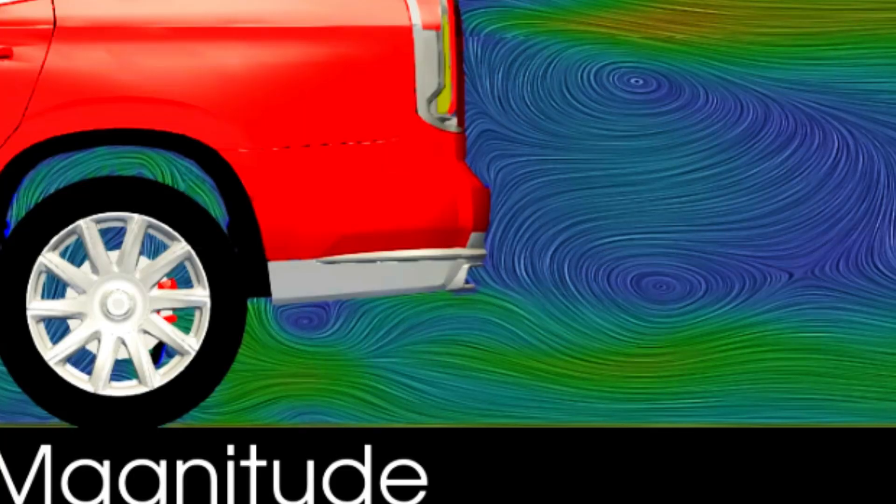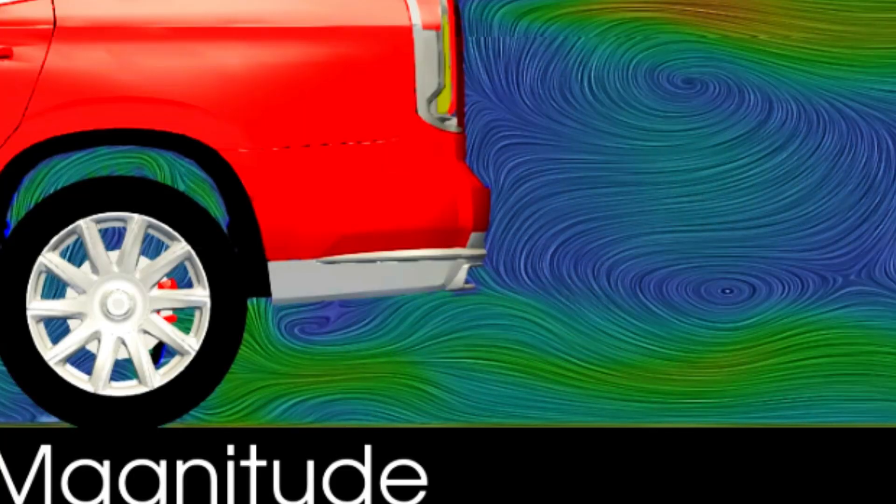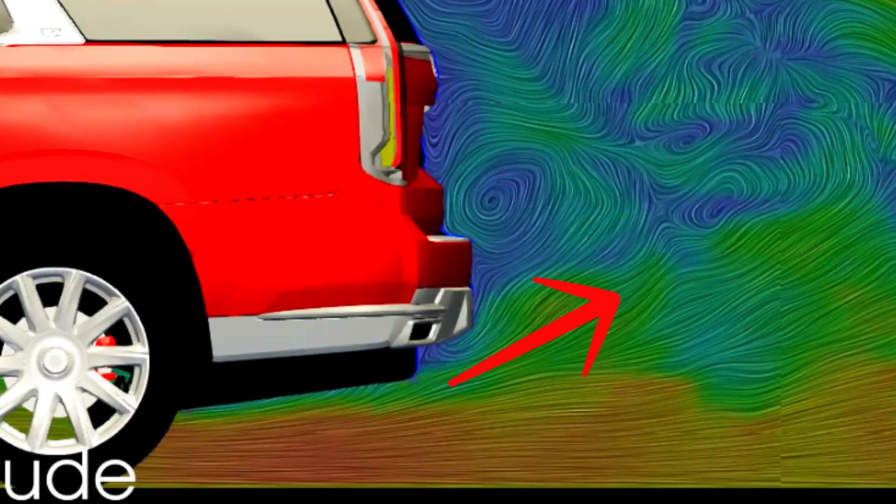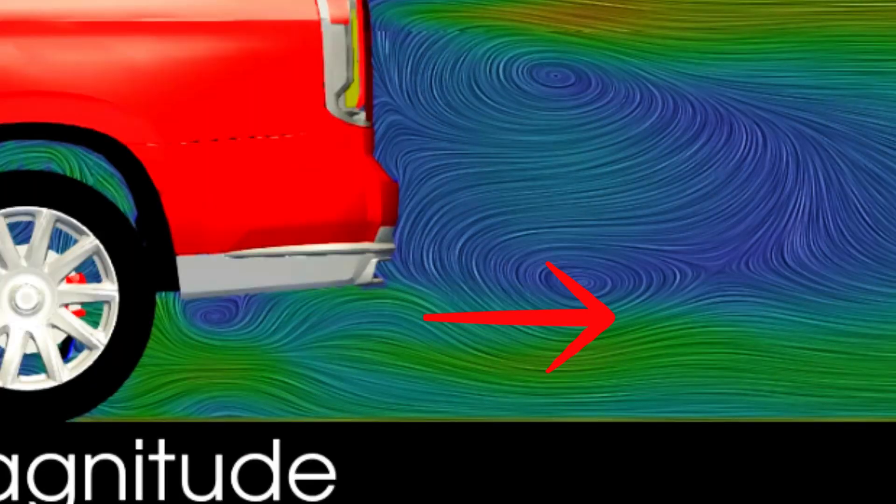And if you look at the wake, you can see how much the bad flow over the diffuser affects its performance. Unlike in the center plane where the flow is kicked up very nicely, here it just migrates downstream very level.